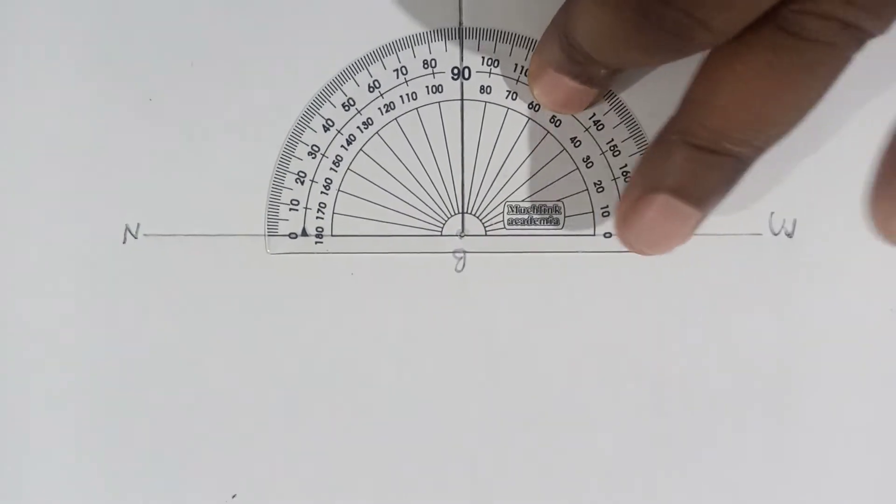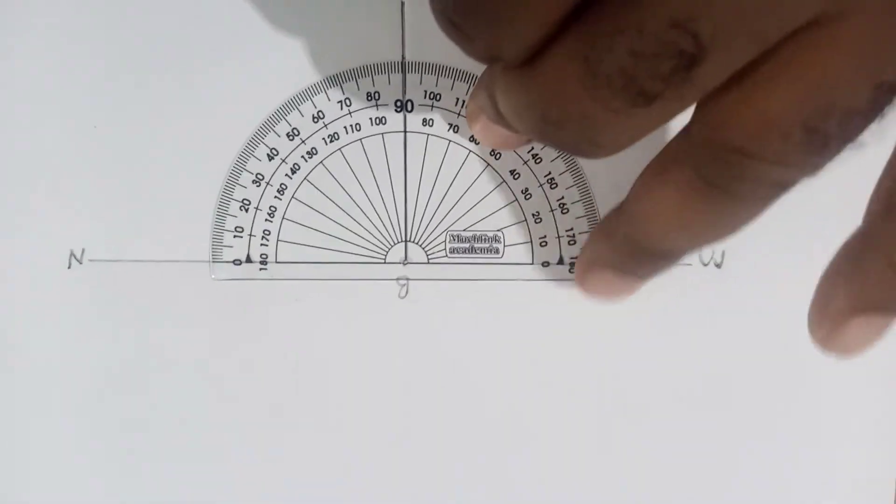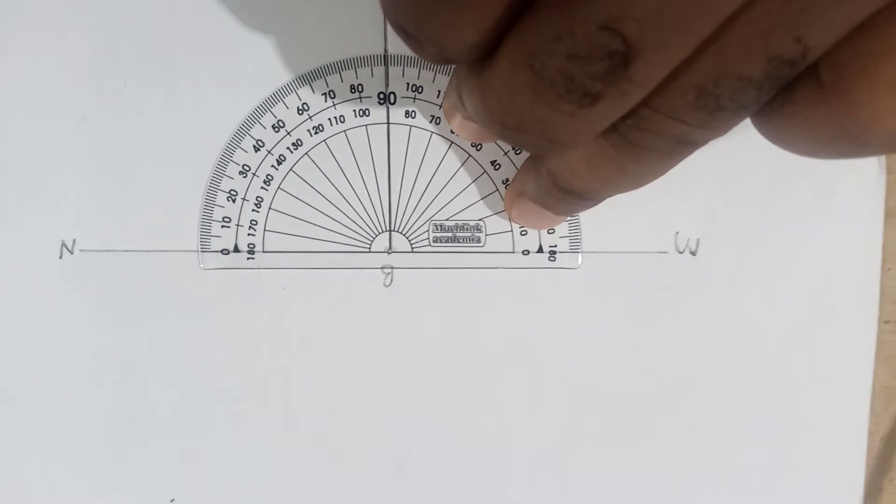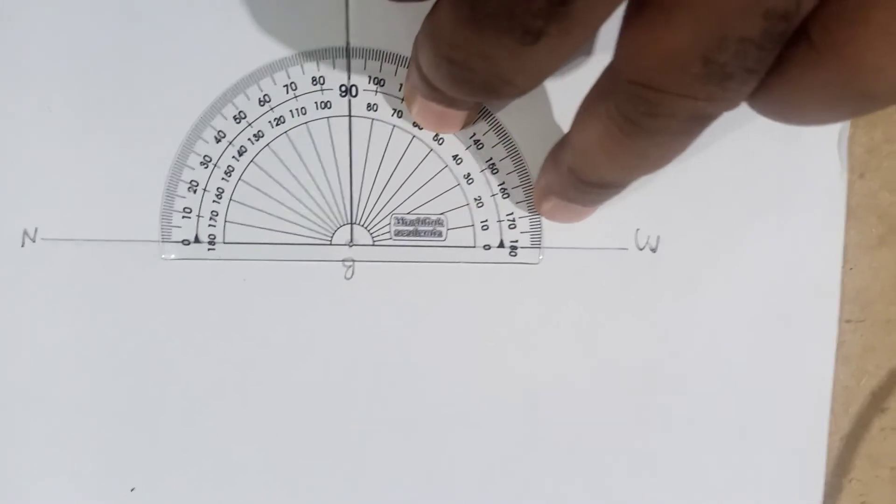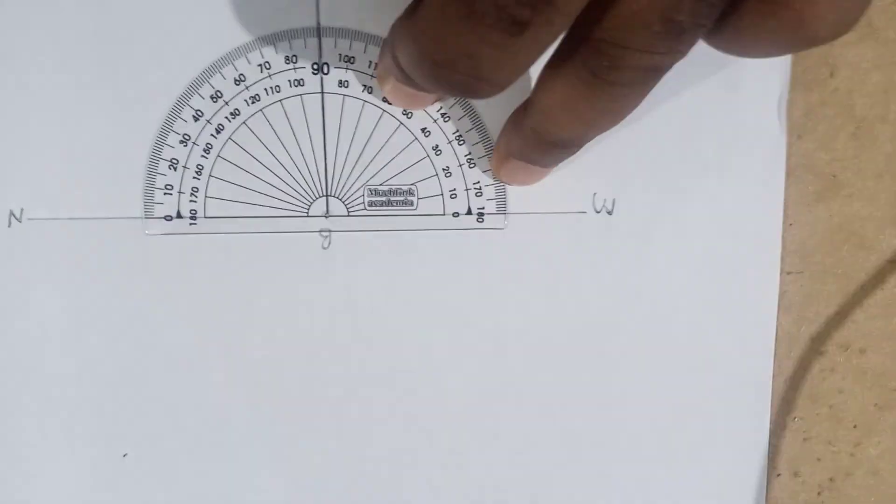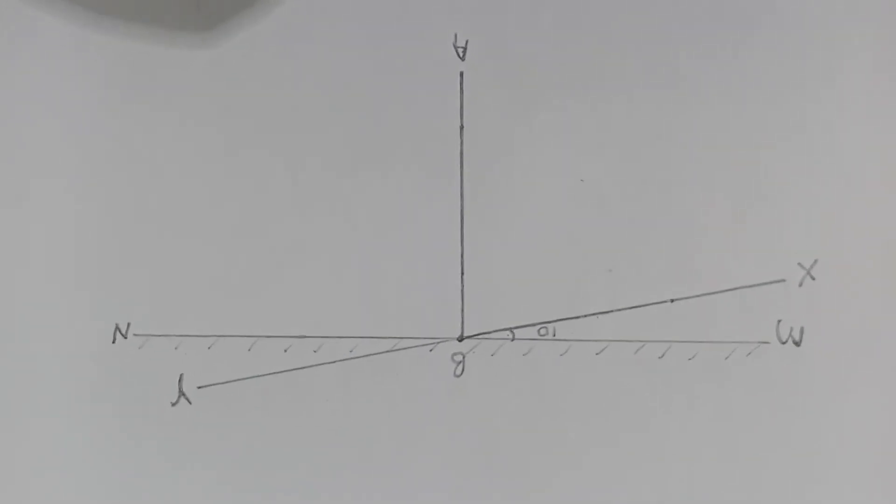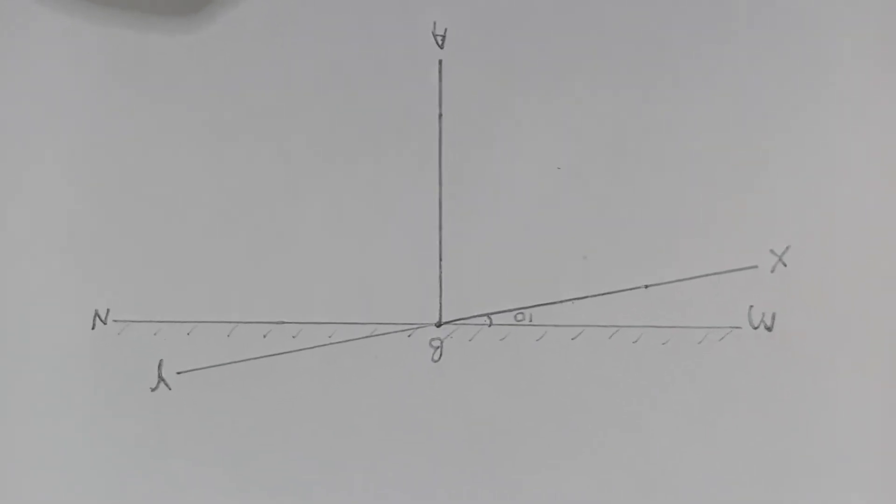What I'm going to do now is that I'm going to mark this point 10 here. You can see from zero I'm reading from zero, from the glass. I'm going to mark point 10 here and then I'll draw the line. So here is what I have. I've drawn the line XY, which is 10 degrees from MN.